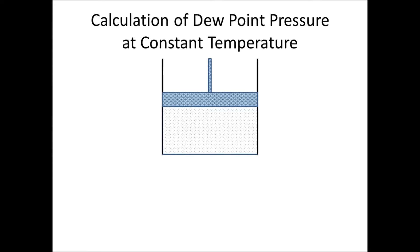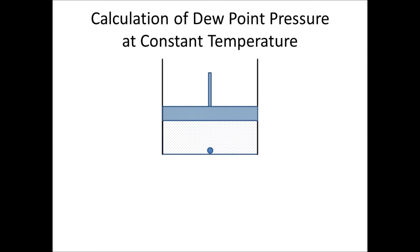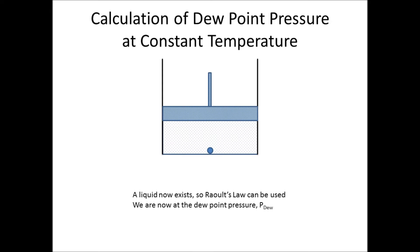Imagine a vapor contained in a vessel equipped with a piston, held at constant temperature. We slowly increase the pressure by compressing the piston down. The pressure increases inside the vessel until we reach a point where one small droplet of liquid forms. This is known as the dew point pressure. Now that we have liquid and vapor coexisting, Raoult's Law can be used to calculate the dew point pressure.